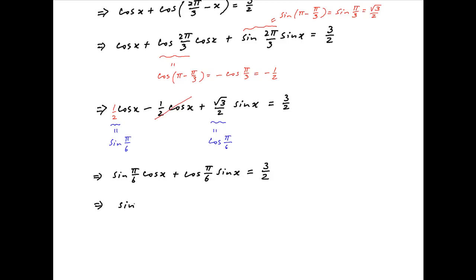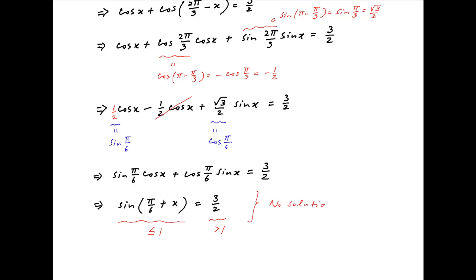The left hand side is the expansion of sin(x + π/6), and this is equal to 3/2. Now notice that the left hand side, which is the sine of an angle, must be less than or equal to 1, and the right hand side is clearly strictly greater than 1. Therefore the left hand side can never equal the right hand side, and so the given equations have no solution.